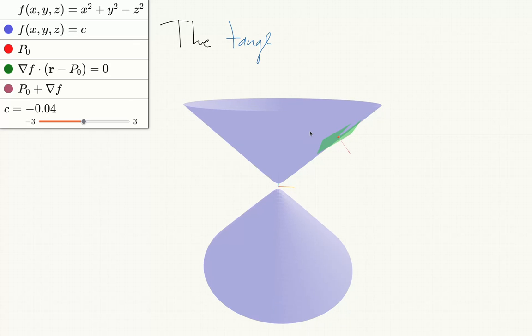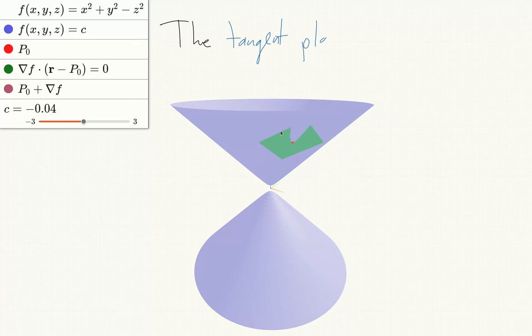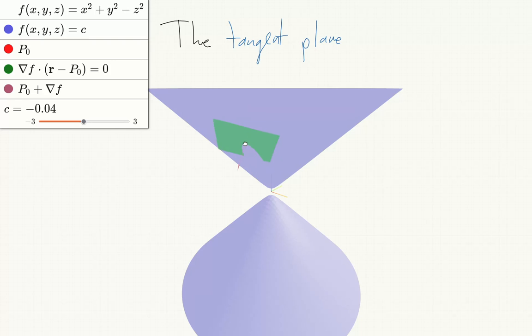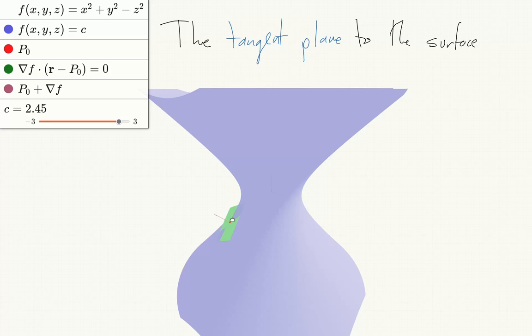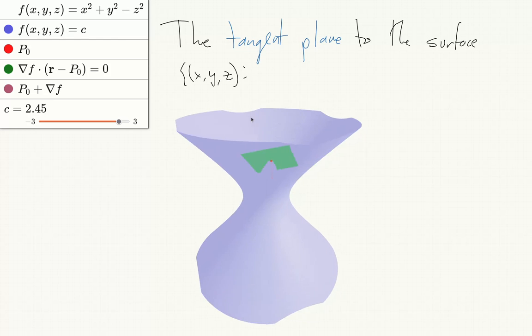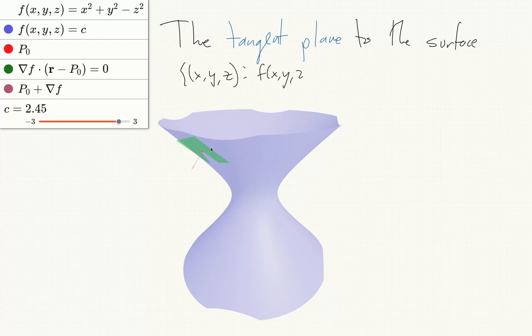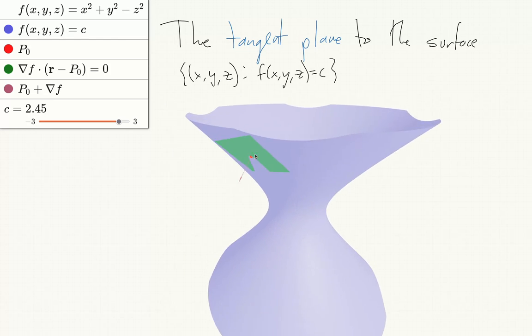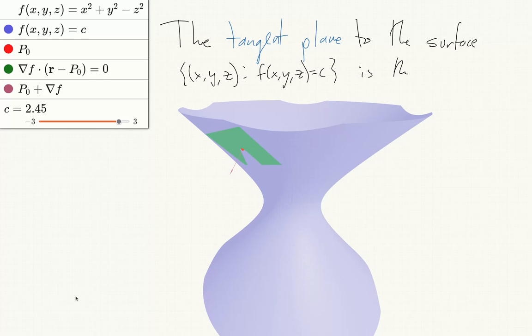The tangent plane to the surface {(x, y, z) such that f(x, y, z) equals c} at a point p0 (x0, y0, z0)